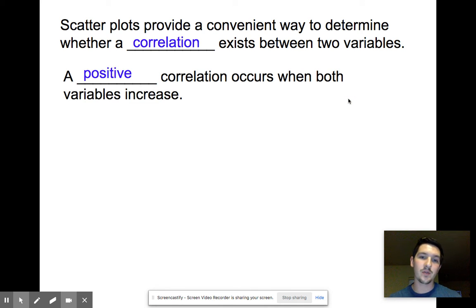We have a positive correlation, which occurs when both variables increase. So as your x increases, your y also increases, just like that last scatterplot we were looking at.